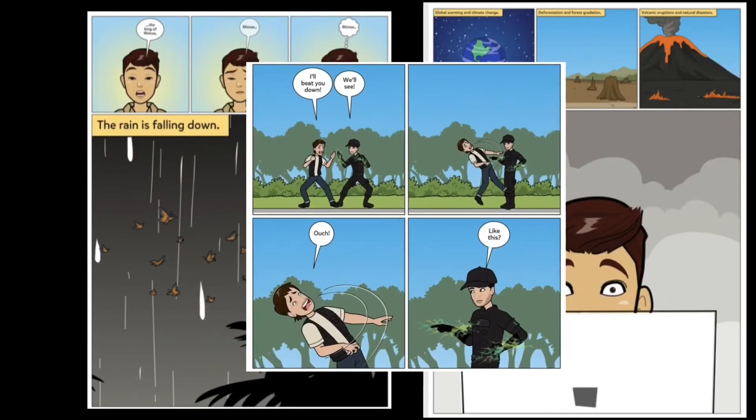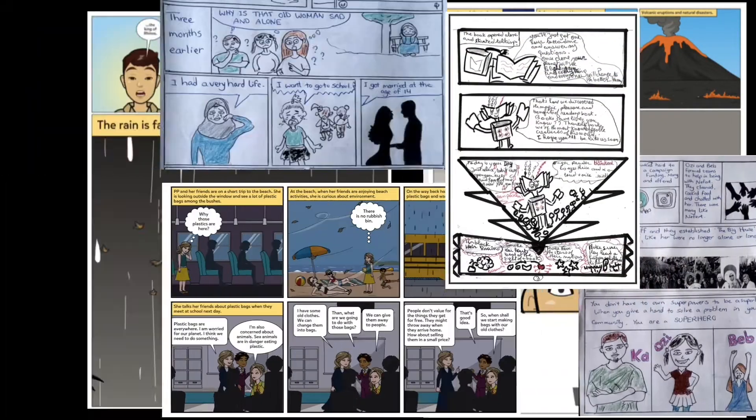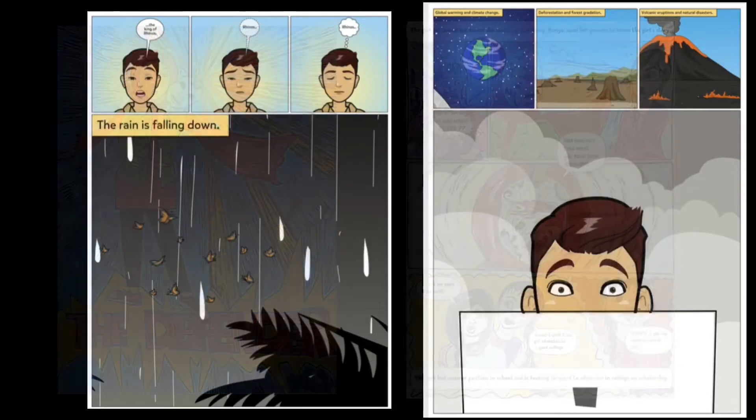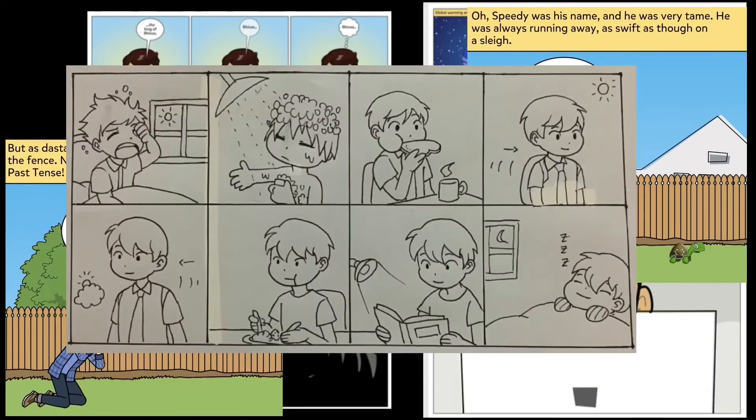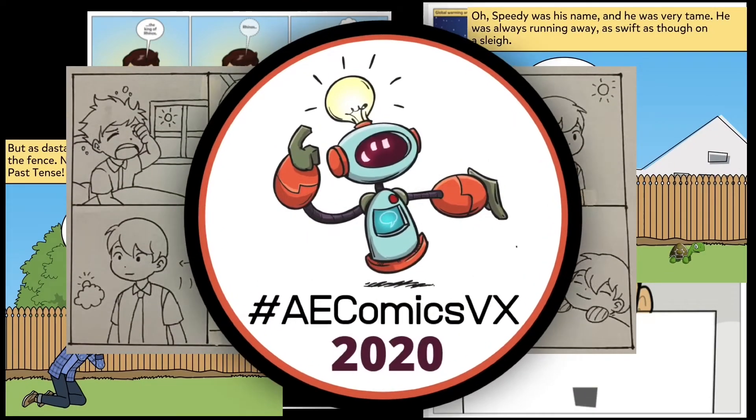I'm Dan Ryder, and this is AE Comics VX. I'm Dan Ryder, co-creator of Panels and Perspectives, and welcome to AE Comics VX. A simple visual vocabulary of just a few shapes, squiggles, and dots can tell all sorts of meaningful stories.